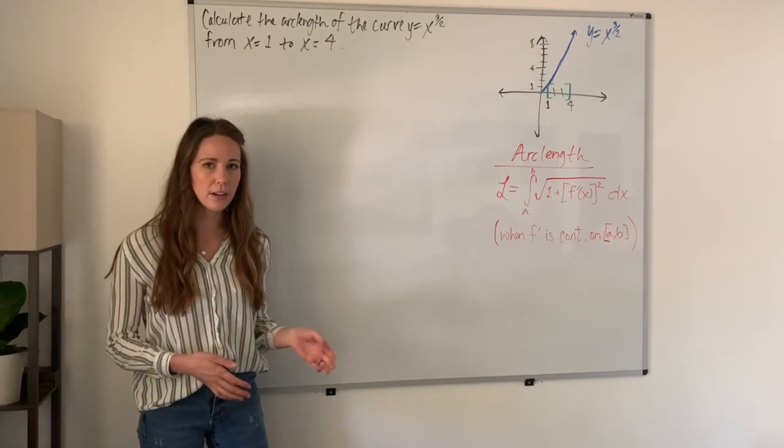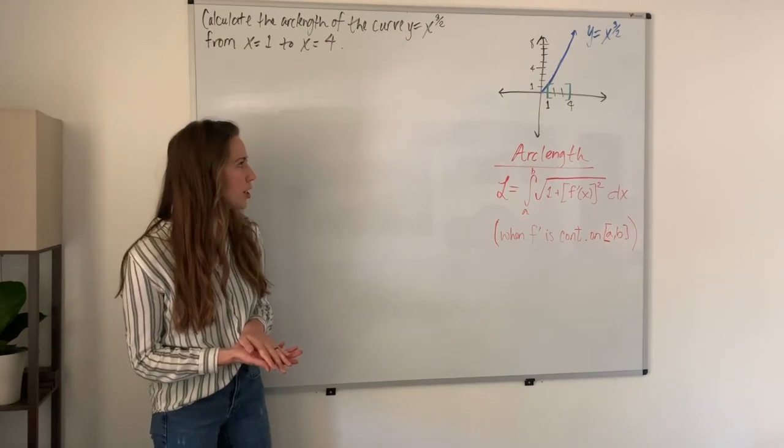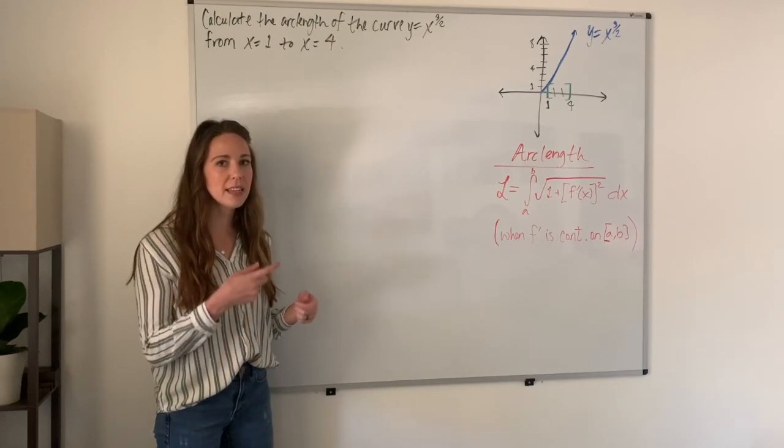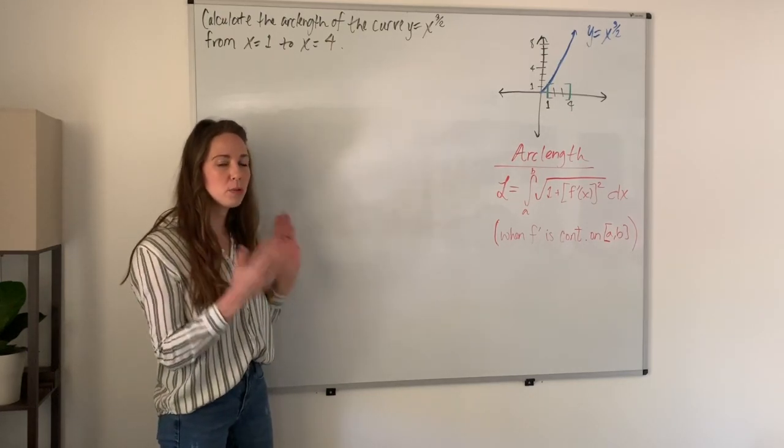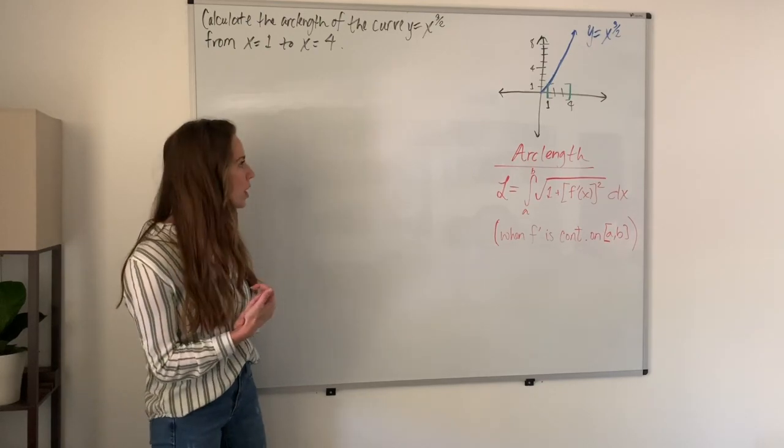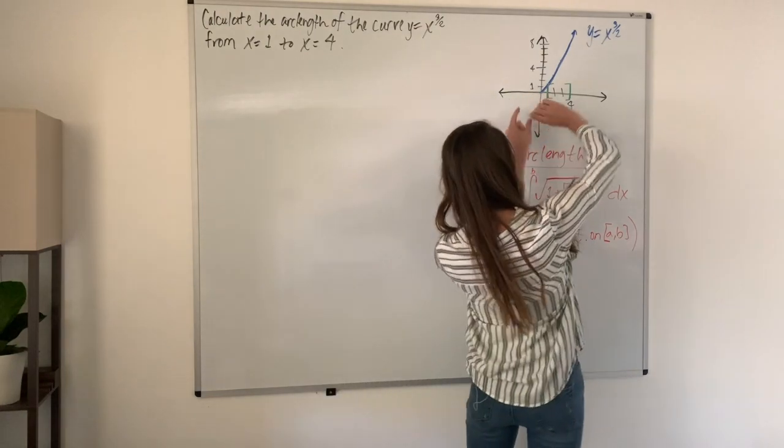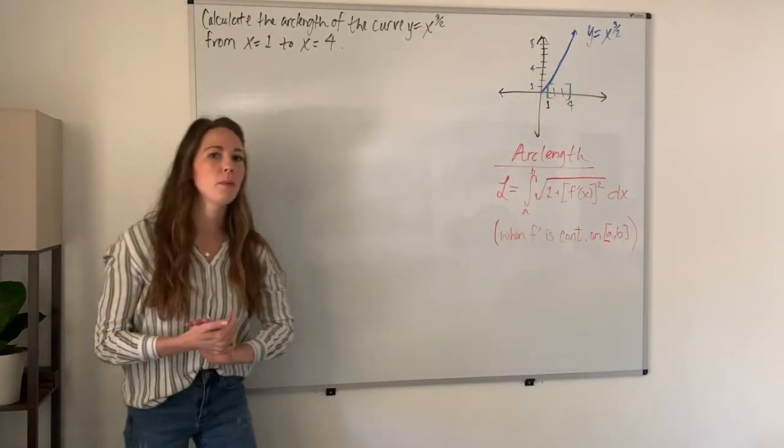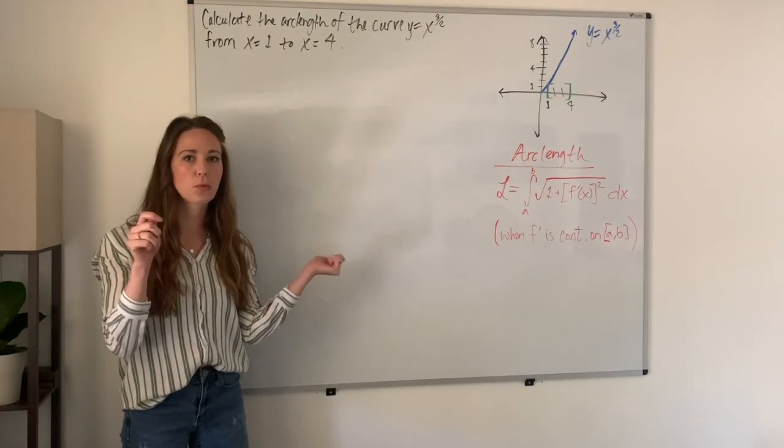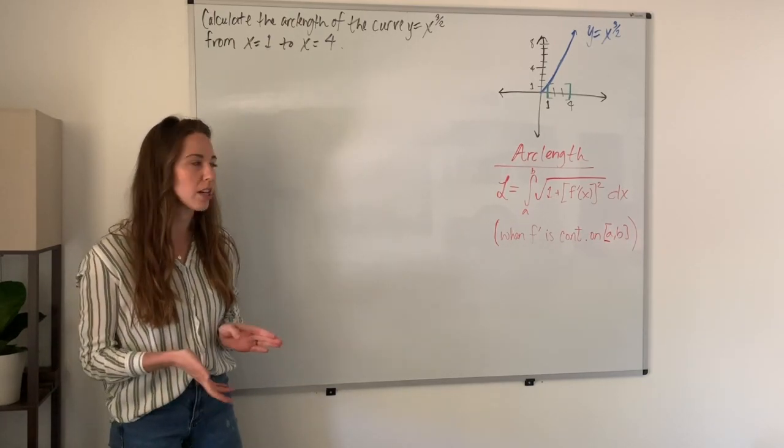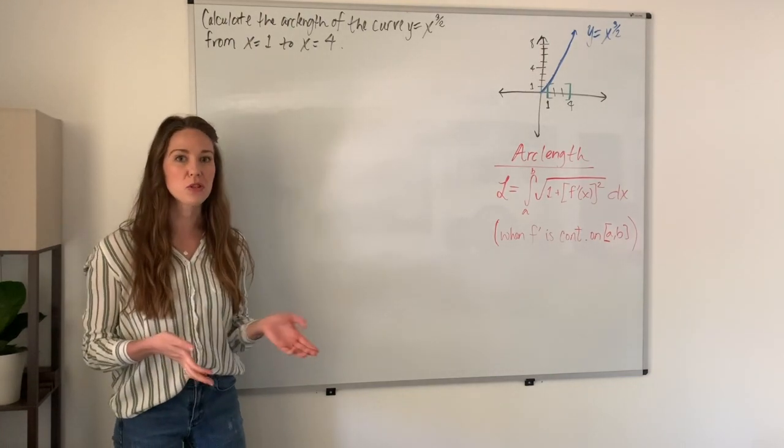When we're looking for the arc length of a function on a given interval, what we're really doing is trying to see the distance along the curve between those two x values. You can imagine if you had a string and could run it along the curve from x equals 1 to x equals 4, then straighten it out and measure it. That's what we're doing.